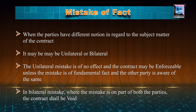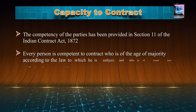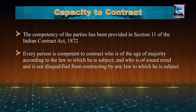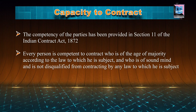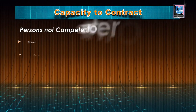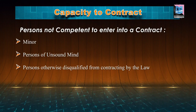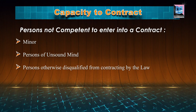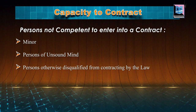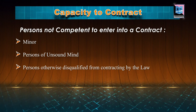The last one is in regard to the capacity to contract. The competency of the parties has been provided by Section 11 of Indian Contract Act 1872. Every person is competent to contract who is of the age of majority according to the law to which he is subject, and who is of sound mind, and is not disqualified from contracting by any law to which he is subject. Accordingly we can say the persons not competent to enter into contract are: number one, a minor — a minor is that person who has not attained the age of majority, and as per the Indian Majority Act, the age of majority is 18 years. The second is the persons of unsound mind. And the third one is the persons otherwise disqualified from contracting by law. So in this case, a special protection is provided to those parties who cannot take an informed decision about a contract. Thank you.